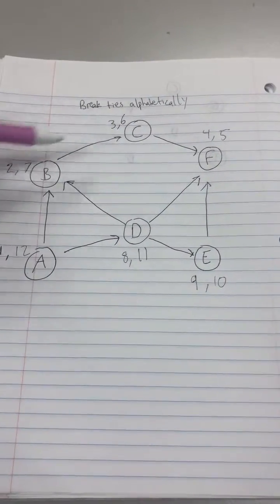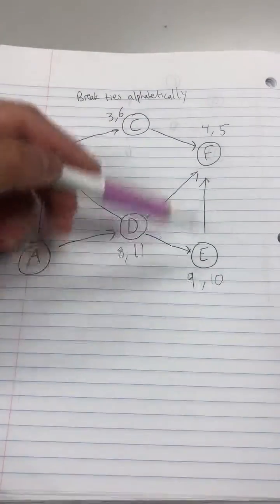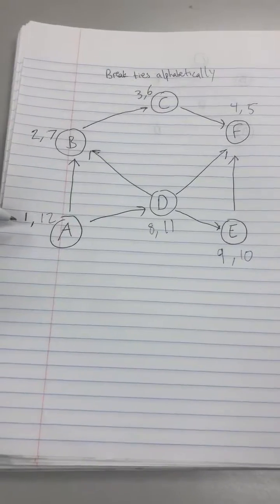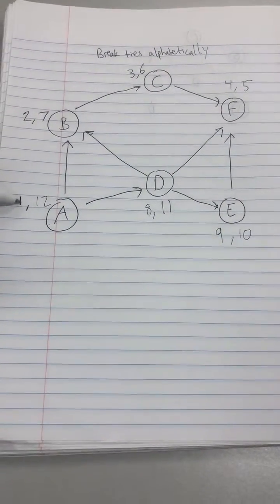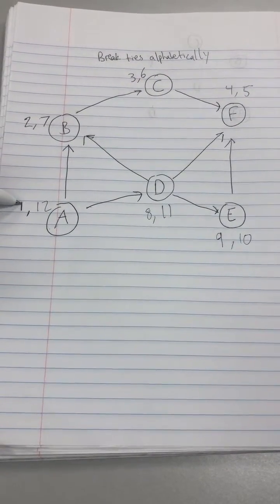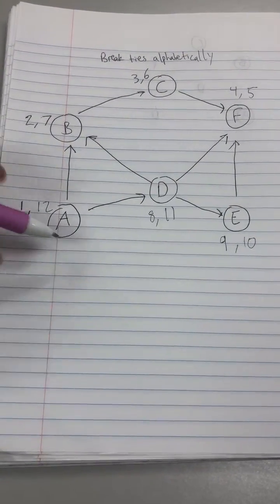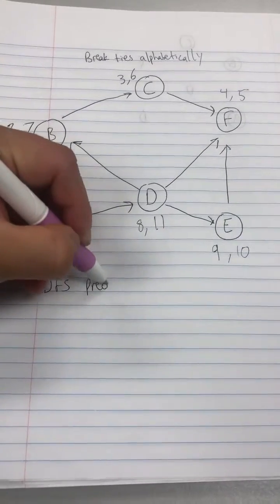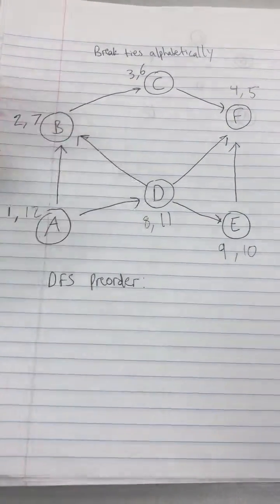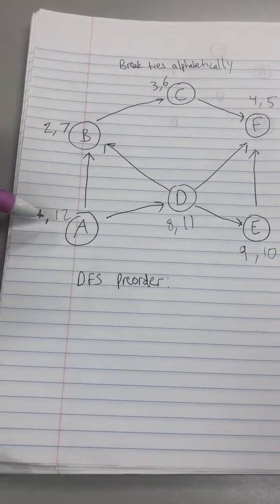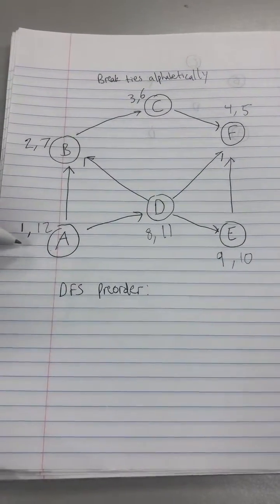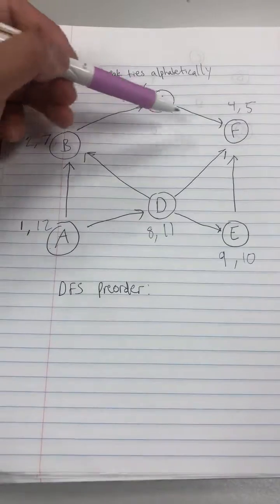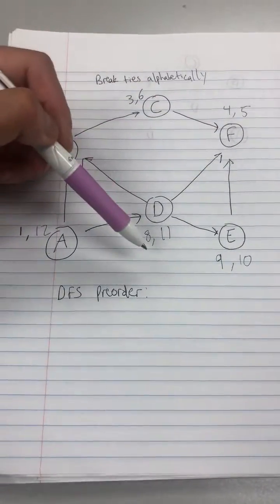So now you see all the nodes have an ordered pair. And to find the preorder you essentially just take the first number in the ordered pair and go from least to greatest. So for the DFS preorder we're going to go from, seems like A is the smallest with one. So A, B, C, F, D, E.